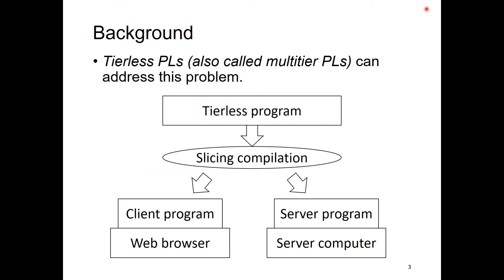Tierless programming languages, also called multi-tier programming languages, can address this problem. You have only to develop a single tierless program. Assuming a client-server model, the slicing compiler will automatically slice it into a client program and a server program. The communication between the two sliced programs will be automatically supported.